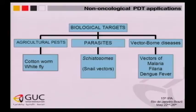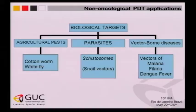Our targets started with vector-borne diseases: the vector of malaria, filariasis, and dengue fever, as well as the parasite schistosomiasis, also called bilharziosis. And lately we will talk about agriculture-based targets like cotton worm and white fly, which make a huge damage to the agricultural economy.